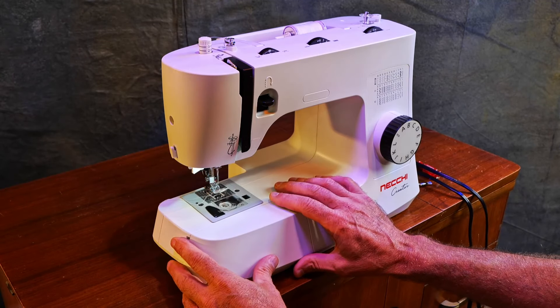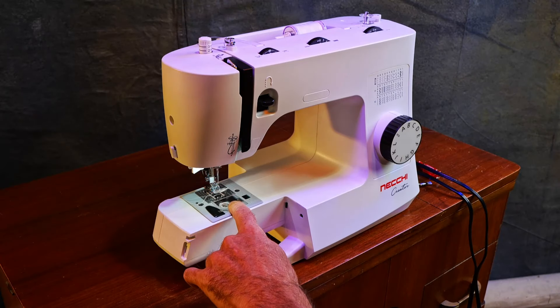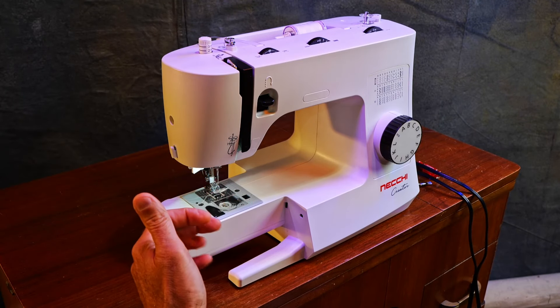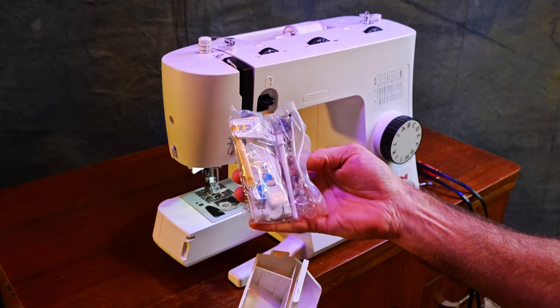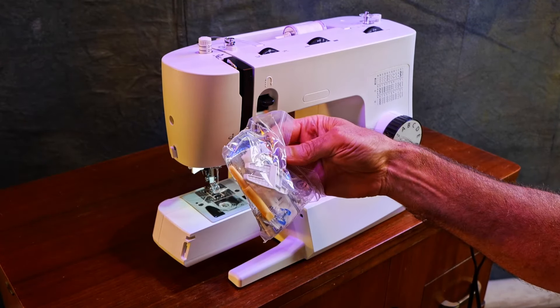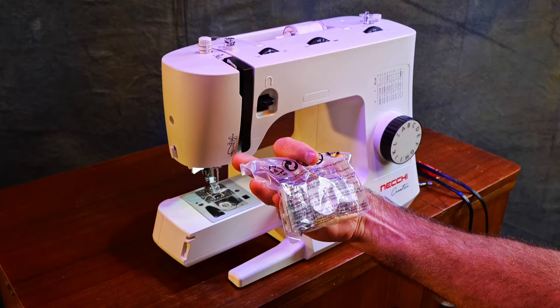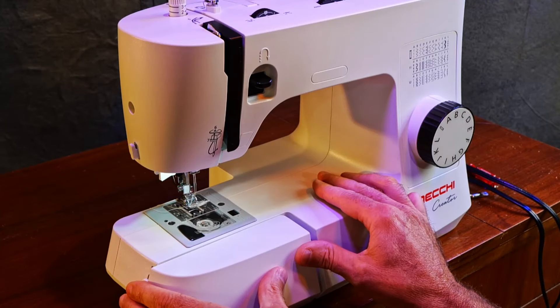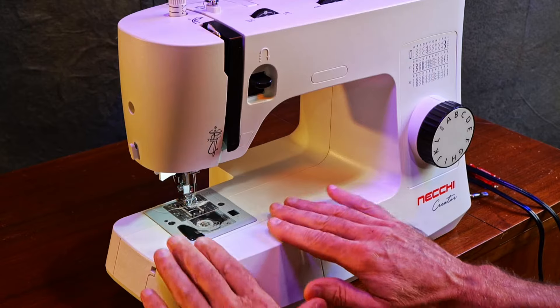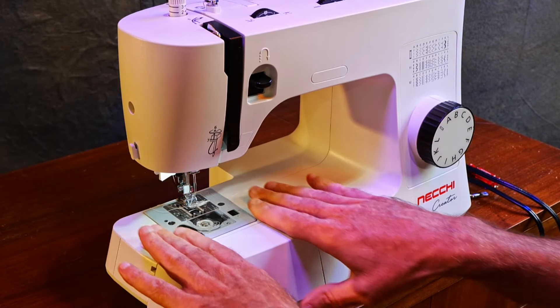This machine has a free arm. You can do cuffs and circular items. This comes off and they have all their accessories in here. There's a few feet, a seam jumper, an extra thread pin. You can put it back and you've got a little more of a work surface here.